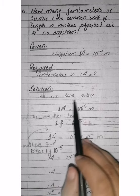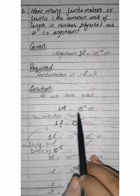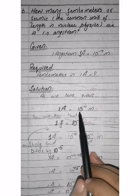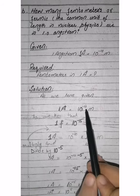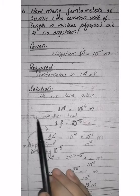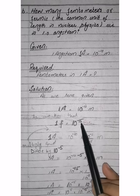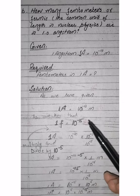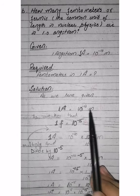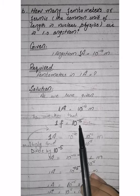Solution: as given, one angstrom is equal to 10 raised to the power of minus 10 meters. Here, instead of nano (10 raised to the power of minus 9), we need femto, which is 10 raised to the power of minus 15. Since minus 10 is less than minus 15, we need to adjust. If we add minus 5 to minus 10, we get minus 15. So we will multiply and divide by 10 raised to the power of minus 5.